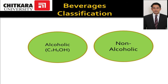Overall, beverages can be classified into two categories: alcoholic beverages and non-alcoholic beverages. Beverages which contain ethyl alcohol, or C2H5OH, are known as alcoholic beverages, and beverages which do not contain ethyl alcohol are known as non-alcoholic beverages. In the coming session we will understand both categories, starting first with non-alcoholic beverages.